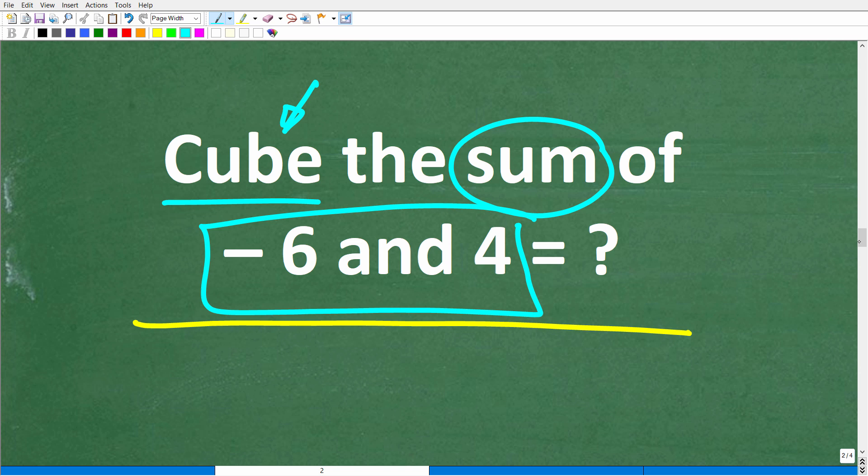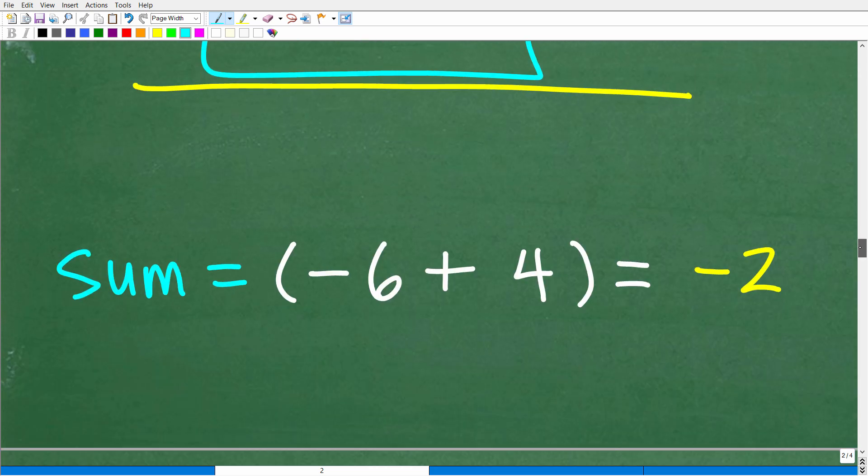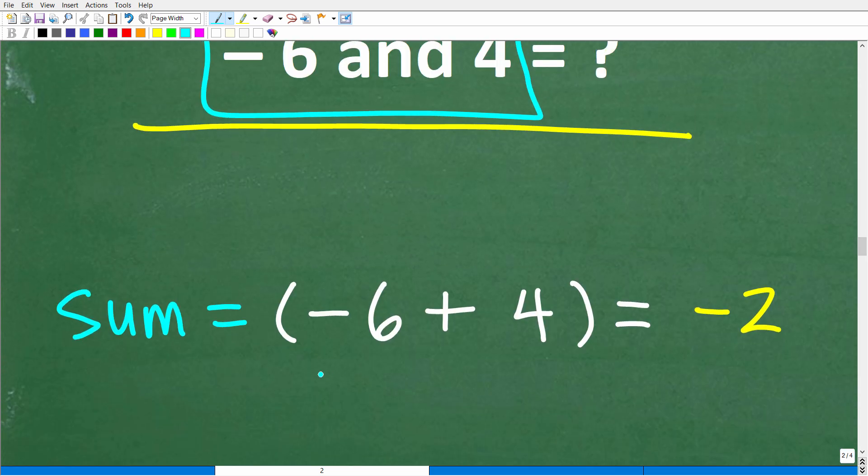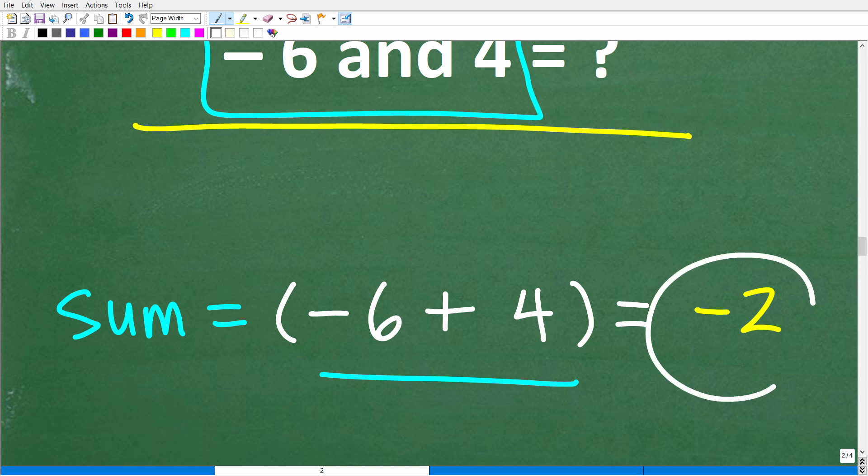Alright, so what is the sum of negative 6 and 4? Well, that means negative 6 plus 4. Now, if you've forgotten how to add positive and negative numbers, no big deal. I'll show you how you can review and learn this stuff. But we are doing this problem without a calculator. But negative 6 plus 4 is equal to negative 2.